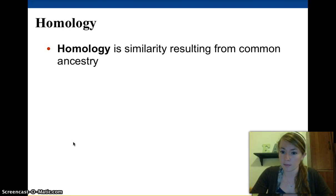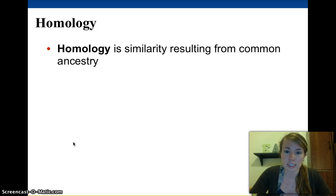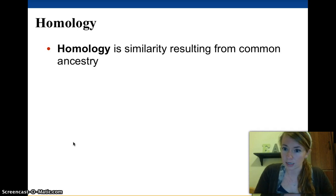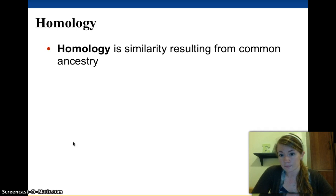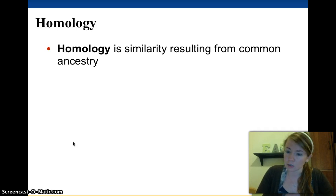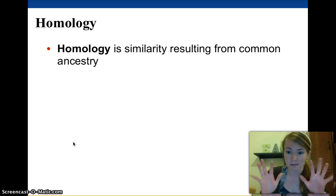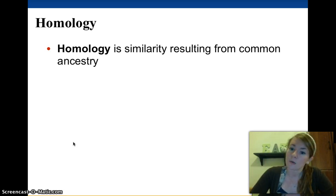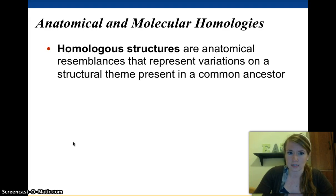Another really important piece of evidence for evolution is what's called homology. Homology is similarity resulting from common ancestry. On the most basic level, you look like your siblings because you have the same parents. On a more drastic level, all humans have eyes and ears and noses and hands and thumbs because we all have one common ancestor. So that's what homology is — similar traits based on ancestry.